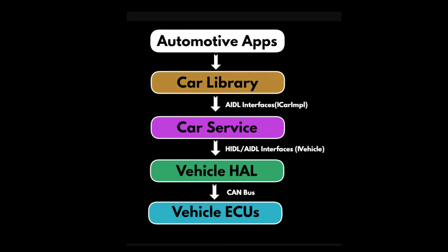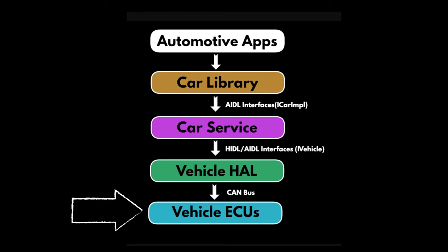The vehicle HAL talks with the vehicle ECUs over the CAN bus or any other vehicle bus. A vehicle bus is nothing but a specialized internal communications network that interconnects components inside a vehicle. Now let's look at the responsibilities of each of these components in the automotive stack, starting from the bottom. The vehicle ECU talks with the CAN bus or vehicle bus — for example, to get the speed of the vehicle, it would talk with the responsible ECU. This data gets propagated to the vehicle HAL as vehicle properties.